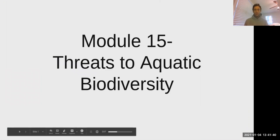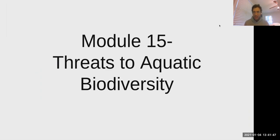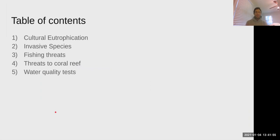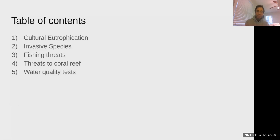Hi everyone and welcome to your module 15 lecture on threats to aquatic biodiversity. Our table of contents: first we're going to look at cultural eutrophication, then invasive species, fishing threats — threats we create through our fishing methods — threats to coral reef, and then briefly go over water quality tests and what we're looking for in those tests.